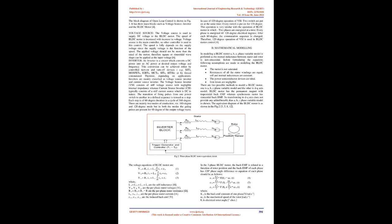The block diagram of open-loop control is shown in Fig. 1. It has three main blocks: voltage source, inverter, and the BLDC motor. The voltage source is used to supply DC voltage to the BLDC motor. The speed of the BLDC motor increases with an increase in voltage. The voltage source is the main controller — no other controller is used in this control. The speed fully depends on the supply voltage since supply voltage is the function of speed. The applied voltage should not be more than the rated voltage of the motor; therefore, square or sinusoidal wave shapes can be applied as the input voltage.